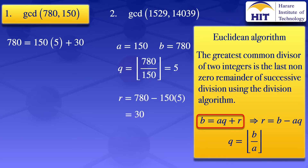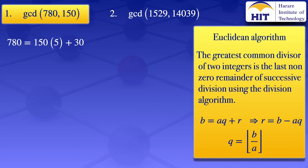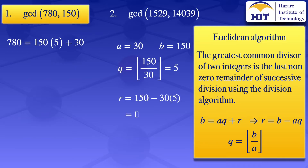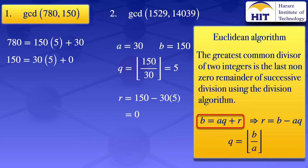We now go on and apply the division algorithm again, but now looking at the numbers 150 and 30. The larger number is B and the smaller number is A. So our A equals 30 and our B equals 150. Our quotient is the floor value of 150 divided by 30, which gives us 5. Our remainder is B minus AQ, which gives us 150 minus 30 times 5, which gives us 0. So we have 150 equals 30 times 5 plus 0.